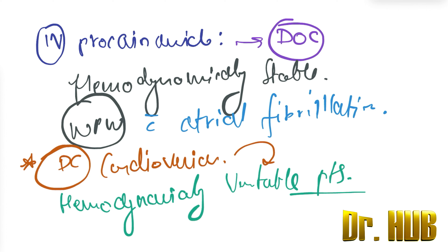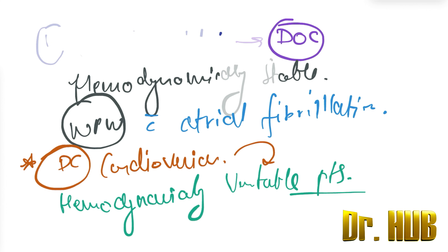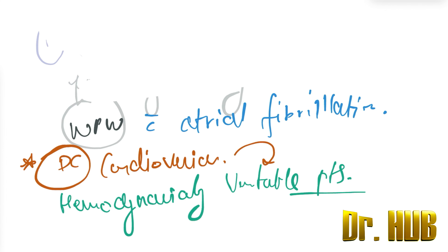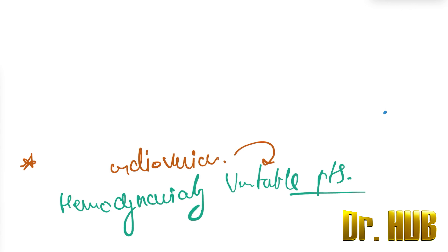To summarize, we covered the entire WPW syndrome: the definition, pathology, most common location, ECG changes including shortened PR interval, prolonged QRS duration, and delta waves, and treatment with catheter ablation as the treatment of choice.